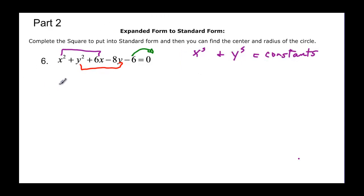So we have x squared plus 6x and then we have plus y squared minus 8y and that's going to be equal to positive 6.